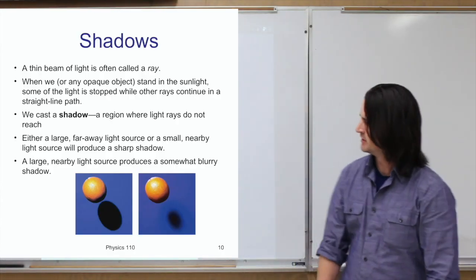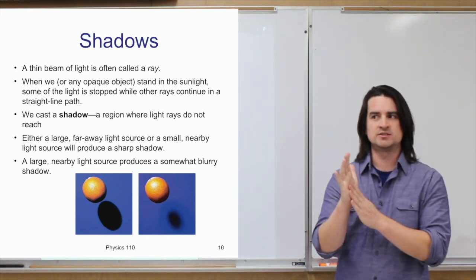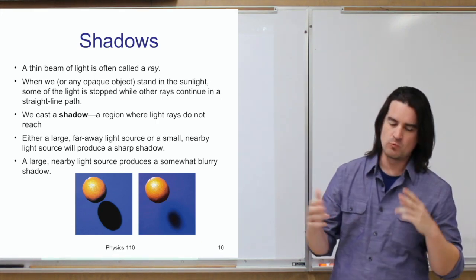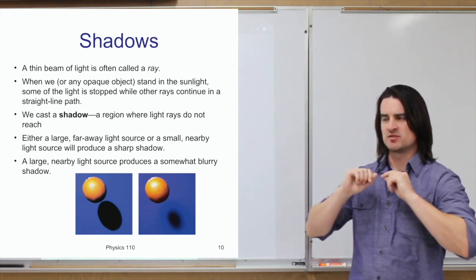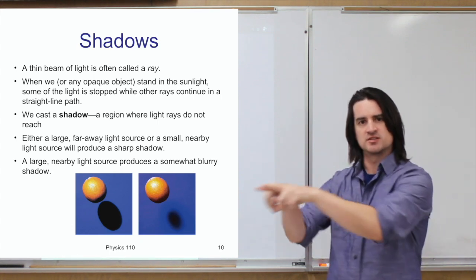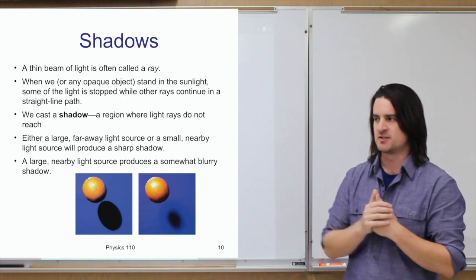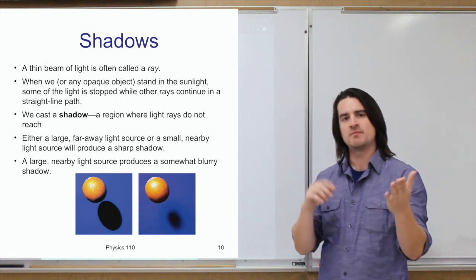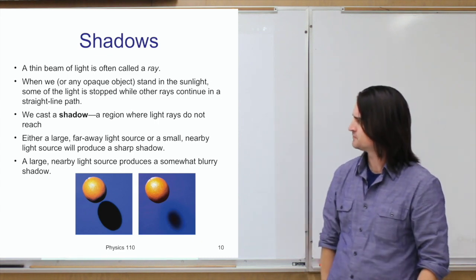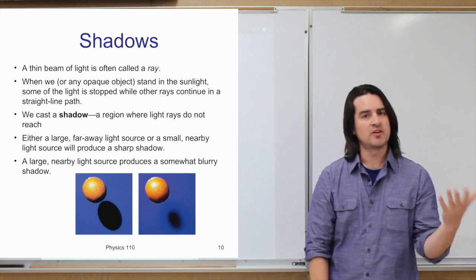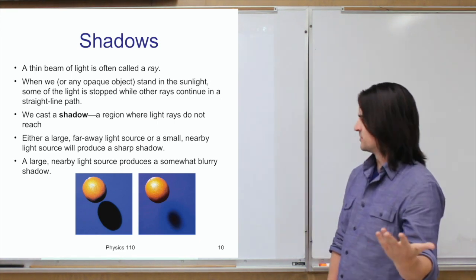Light casts shadows. One useful way to think about light is as a ray or beam — like laser light going in a straight line. We can imagine light as arrows, almost like vectors, indicating direction. This ray model is very useful for analyzing the effects light has, for instance when casting shadows. If you have an opaque object in front of some light, it will cast a shadow.